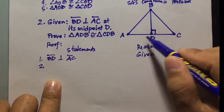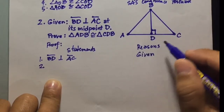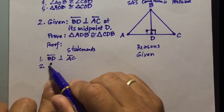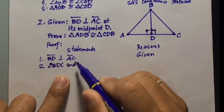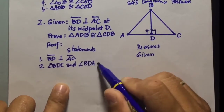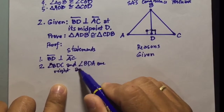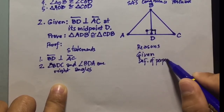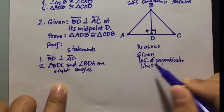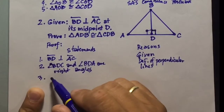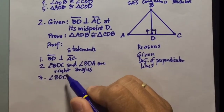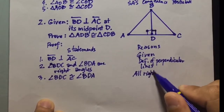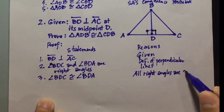Since these two line segments are perpendicular, we can say that these two angles form right angles. So angle BDC and angle BDA are right angles — this is the definition of perpendicular lines. Then since the two are right angles, we can say they are congruent: angle BDC is congruent to angle BDA. The reason is 'all right angles are congruent.'